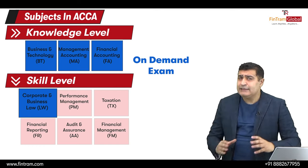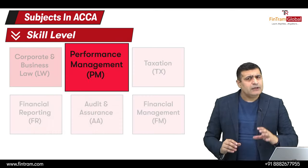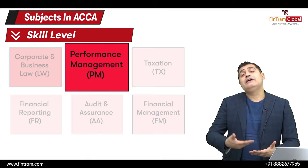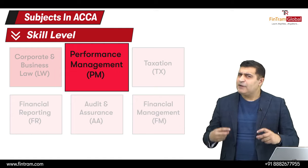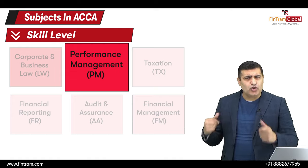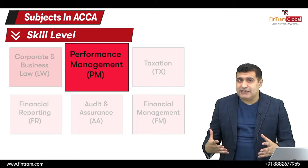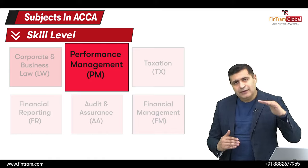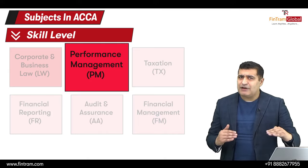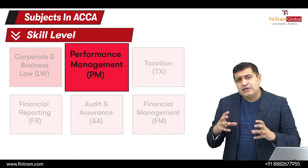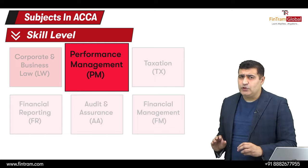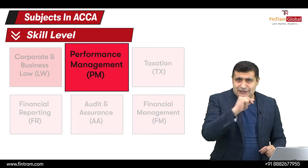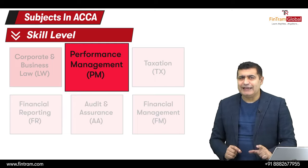Ab baat karte hain Skill level ke Performance Management ki. Humne Management Accounting se shuru kiya tha, basic costing padh li — yeh uska second level hai. Yahaan par again marginal costing concept, standard costing, job costing, process costing sab samjhenge, but bilkul second ya higher level ka hoga as compared to jo humne ground level par sikha hai. Jo graduation kar rahe hain wo already yeh dekh chuke honge ya dekh rahe honge; Chartered Accountancy ke students to already jaante hain.